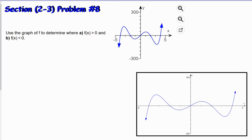Here we are in section 2-3, problem number 8. This problem states to use the graph of f to determine where f(x) is greater than 0 for part a, and where f(x) is less than 0 for part b.